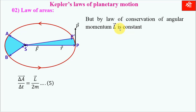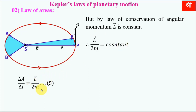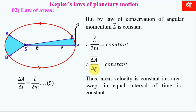Since the planet's angular momentum is constant and the mass of the planet is constant, vector L upon M is constant. Therefore delta A upon delta T equals a constant, meaning delta A equals constant into delta T. Equal time intervals give equal areas. Thus, area velocity is constant — that is, the area swept in equal intervals of time is constant. This is the proof of Kepler's second law, the law of areas.